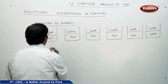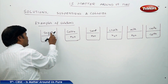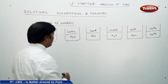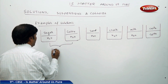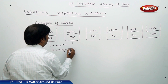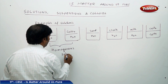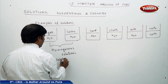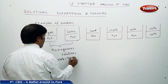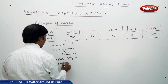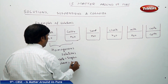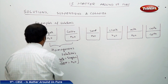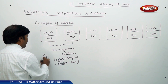Sugar is going to completely dissolve in water and copper sulphate is going to completely dissolve in water, so I can say that these two are homogeneous solutions in which the solute is sugar and the solvent is water. This is a solid in liquid type of solution.